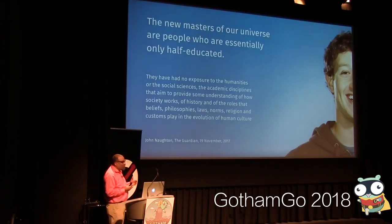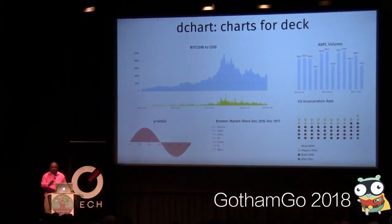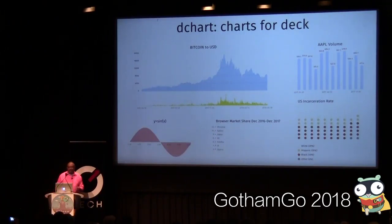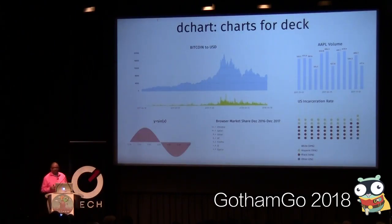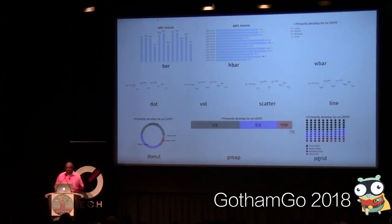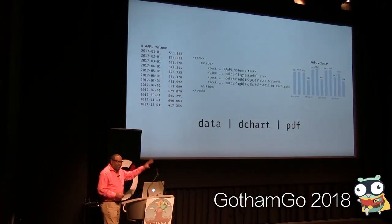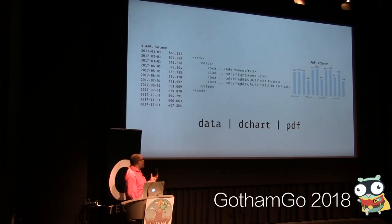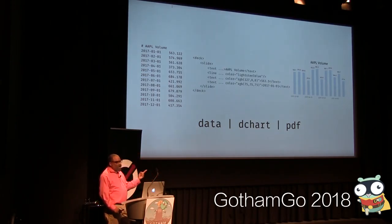I love this idea of illustrating things that I see — here's another example that I found fascinating. The last thing I want to talk about is dechart, which is charts for Go. Sometimes when doing presentations you need a chart, so over the holiday I built this package. Charts become embedded right into your presentation. There are ten different kinds of charts: bars, dots, volumes, scatter, lines, donuts, pie maps, and pie grids for proportional data.